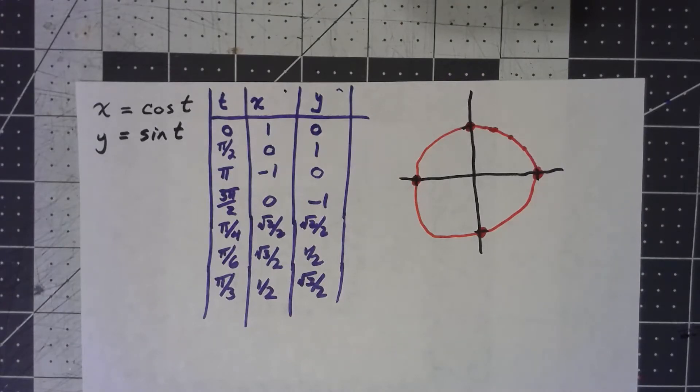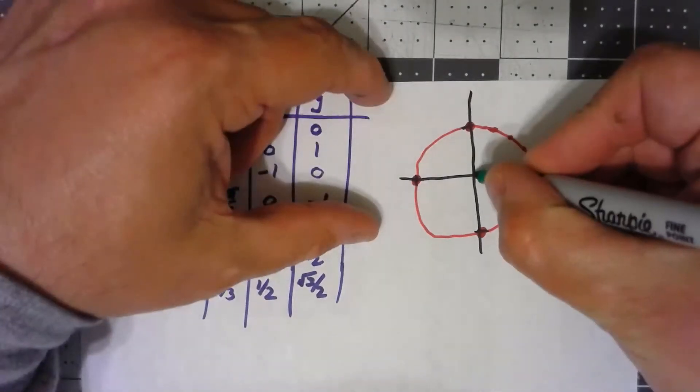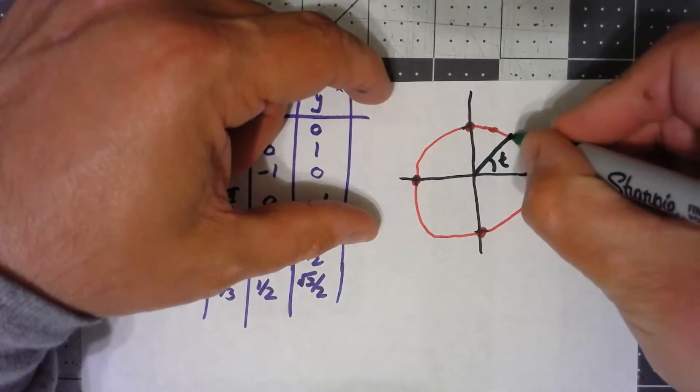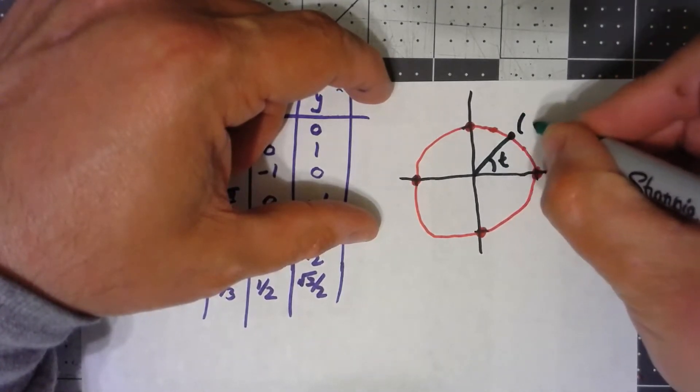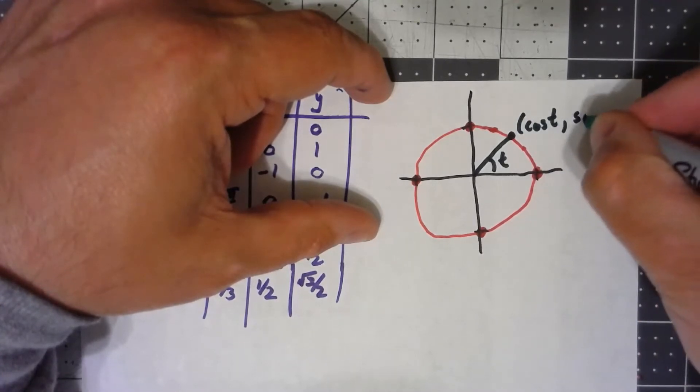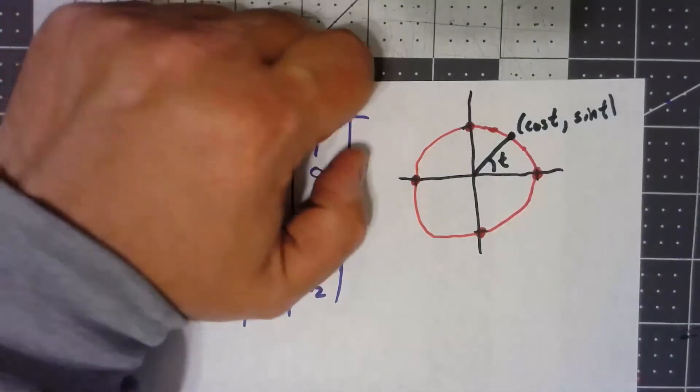Now this shouldn't be a surprise because, just based on regular trig, if I have an angle here of t, this point right here is the cosine of t, the sine of t, where the circle has radius 1.